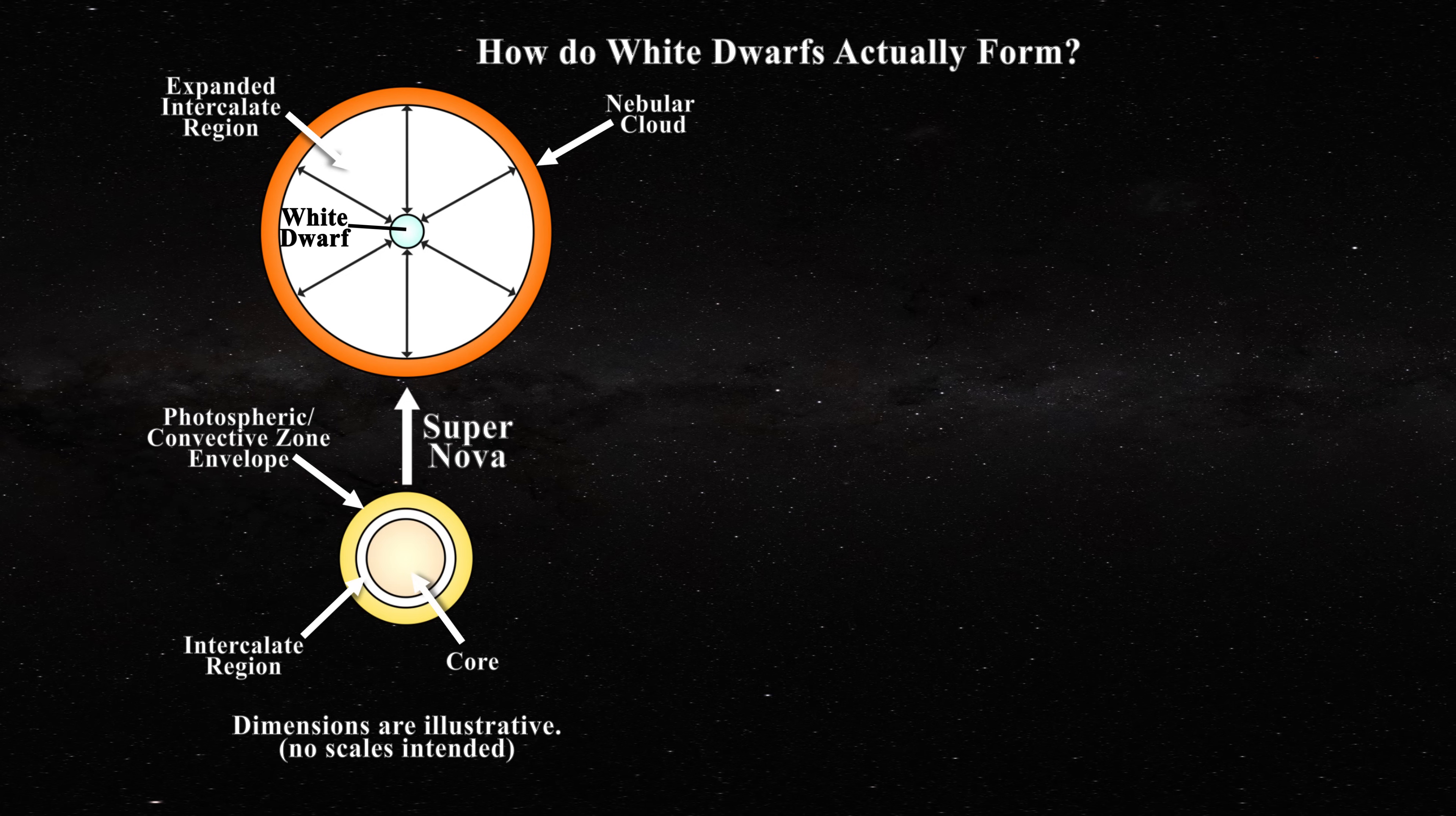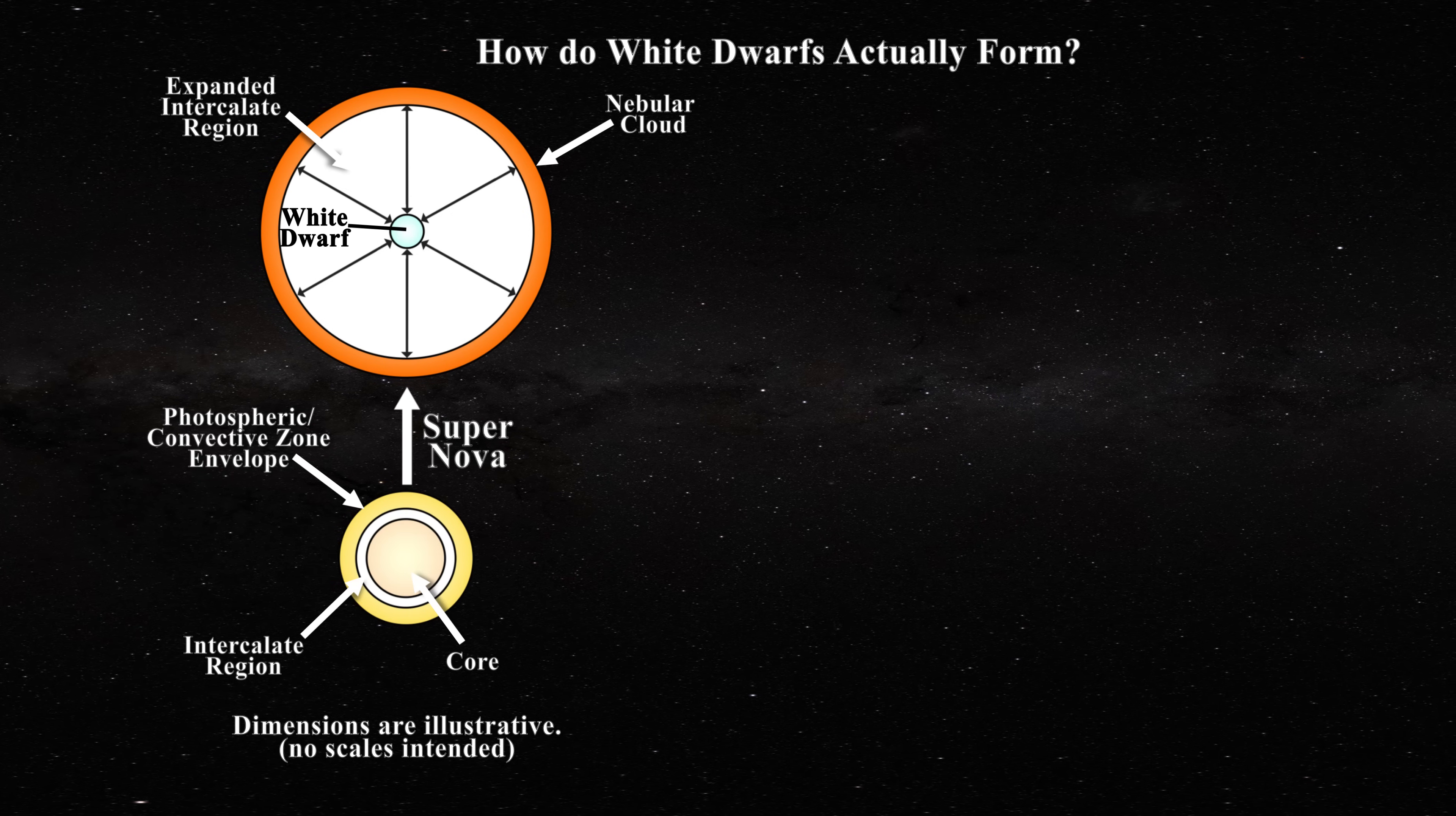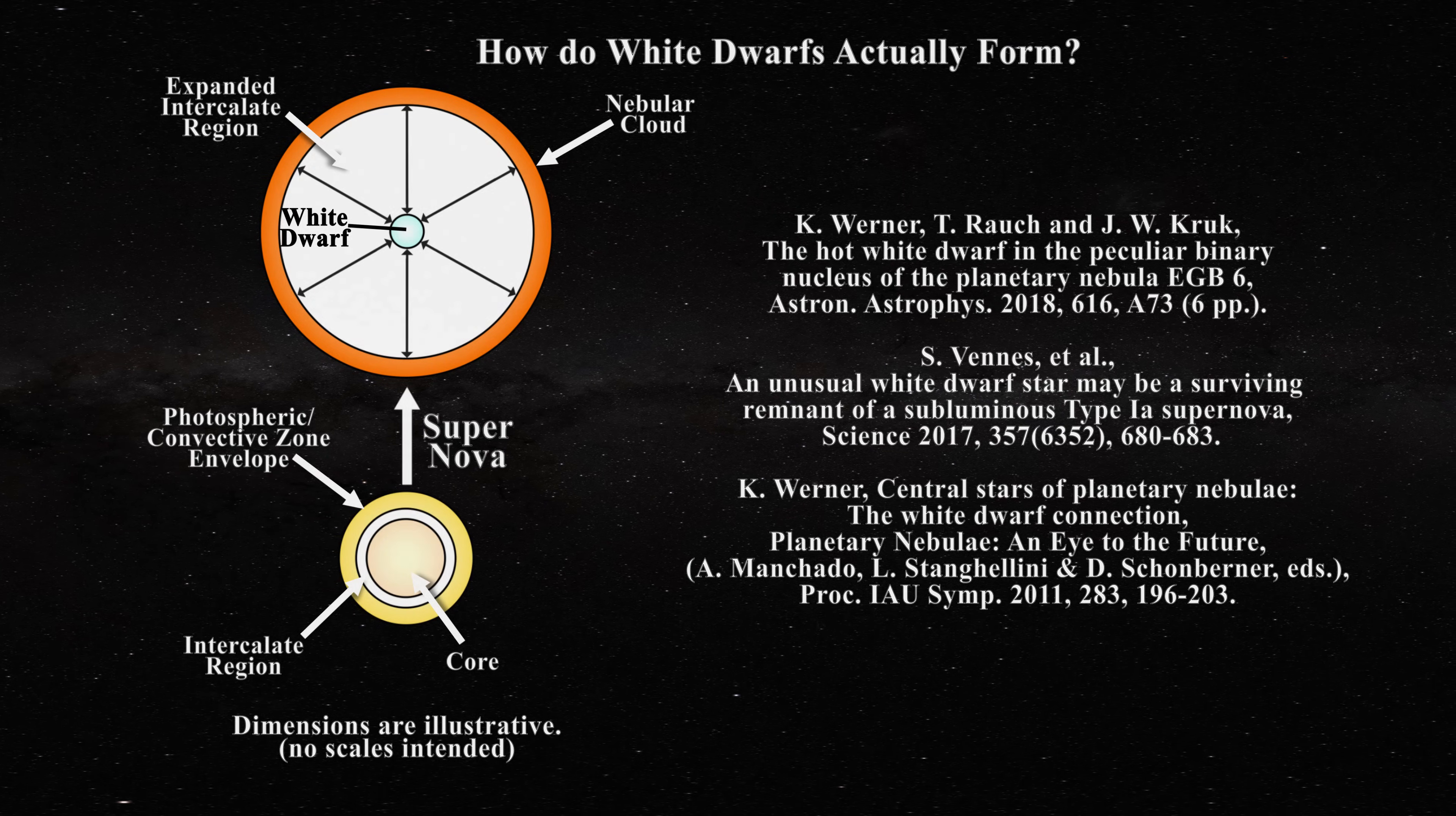The idea is supported by the fact that white dwarfs are known to be found as remnants of supernovae and at the center of some planetary nebulae, as one can learn in these papers. In some cases, perhaps the stellar envelope has sufficient time to dissipate away and we are left with a single white dwarf.